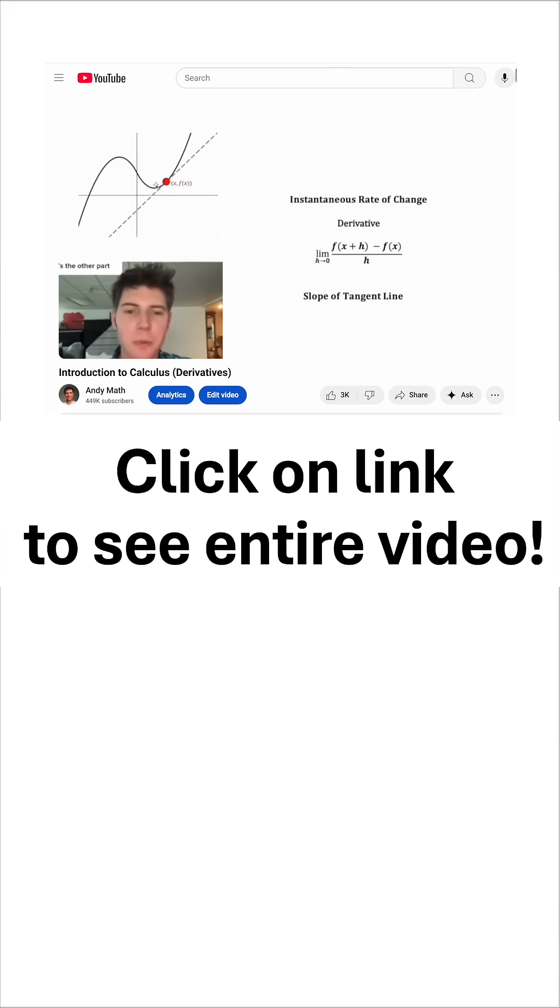As this moves around, we can find the slope of the tangent line for all of these points. Let's do a specific example. Let's look at the parabola y equals x squared.